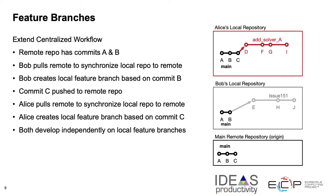A special type of branch is a feature branch. Developers usually work on some sort of feature and when it is finished it will be merged into the main branch, then the feature branch can be discarded. Developers can work on different features and fixes simultaneously. The example on the right shows two people, Alice and Bob, working on one repository. Alice has downloaded the main branch to her local machine and has created a feature branch for add solver A. She started from commit C of the main branch and has added commits D, F, G, and I.